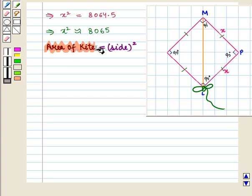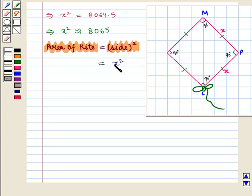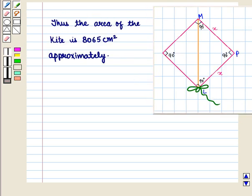Now, we know that area of kite is equal to side squared which will be equal to X², and we know that X² is approximately equal to 8065. So, this is approximately equal to 8065. Thus, the area of the kite is 8065 square centimeters approximately.